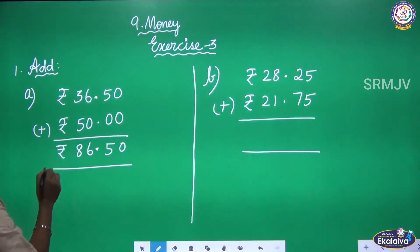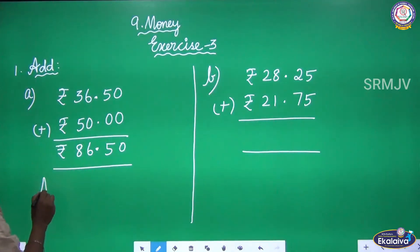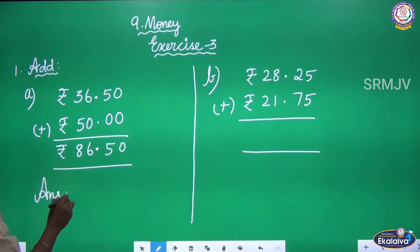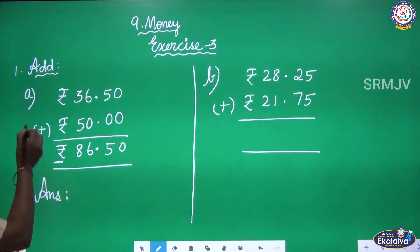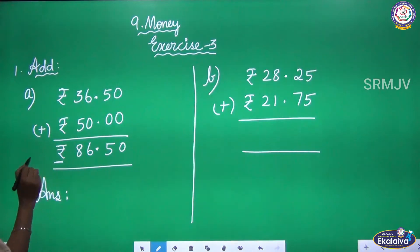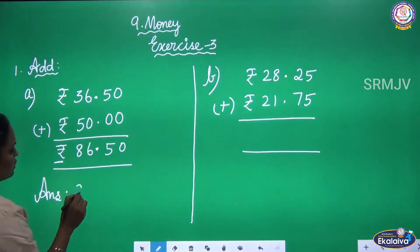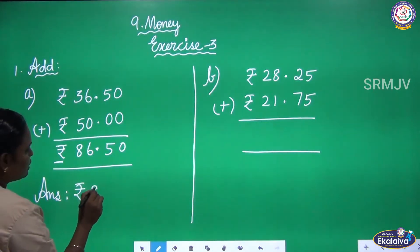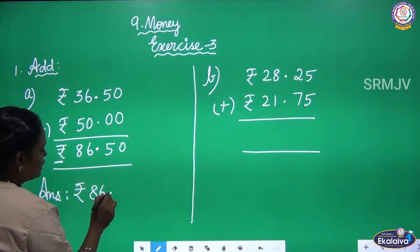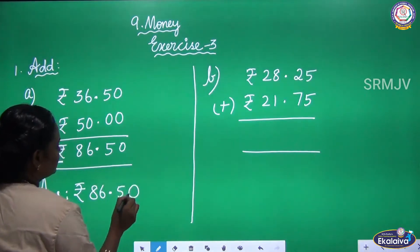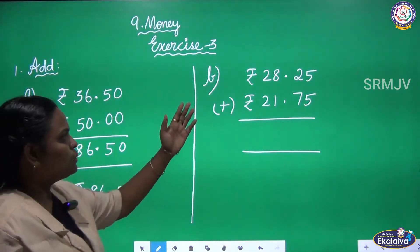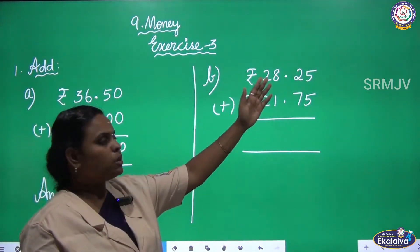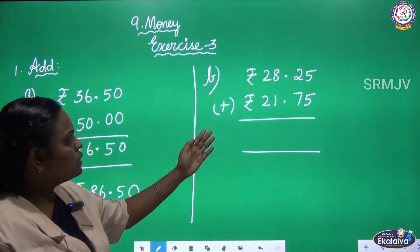Write the Rupees symbol. Now you tell me the answer — how much Rupees? You should write the Rupees symbol because they have given Rupees and Paise. The answer is Rupees 86, 50 Paise. Next one: they have given 28 Rupees 25 Paise and 21 Rupees 75 Paise.